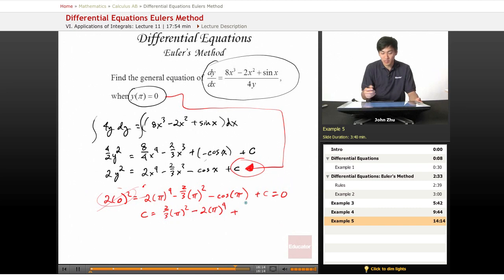Cosine of pi is simply just negative 1. So negative 1 right here. So we get 2 thirds pi squared minus 2 pi to the fourth minus 1.